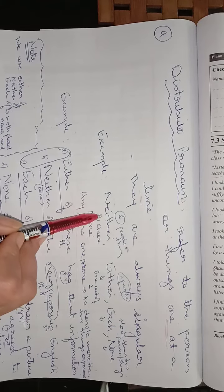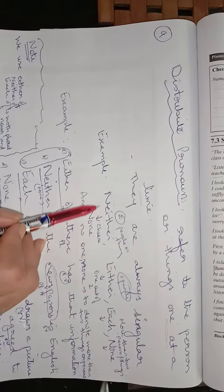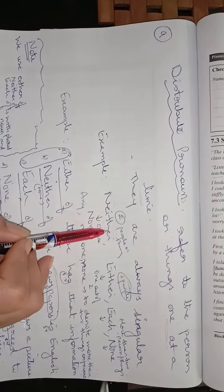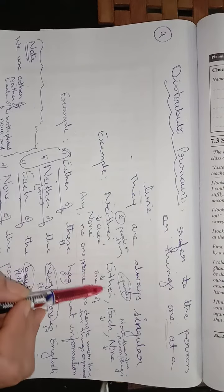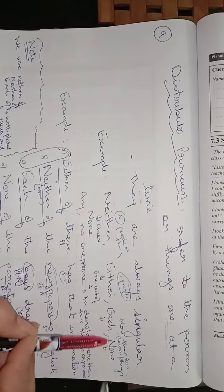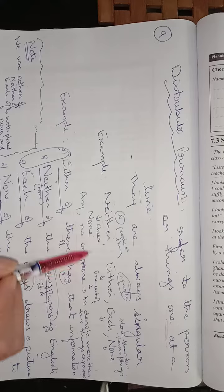See the terms which we use for distributive pronouns? We use this word neither, either, each, none, any, no one.